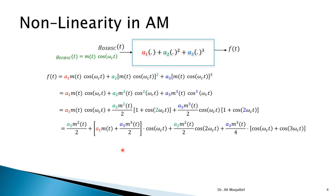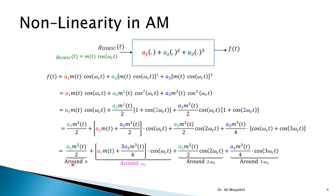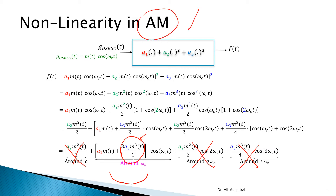Now we collect the terms together. We multiply by cosine and collect them based on frequency: one term around zero (DC), one term around 2ωc, and another around 3ωc. The term we're interested in is the modulated term around cosine ωc. Checking whether we still retain the message — the answer is no, because we have a distortion term: a third harmonic, or m³(t), of the message. The other terms can be removed by filters, but this distortion term is damaging. So AM is not immune to nonlinearity.